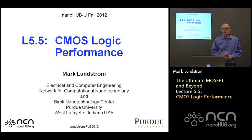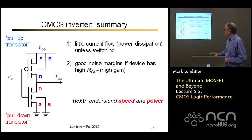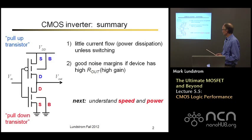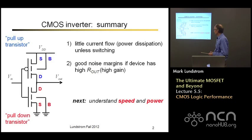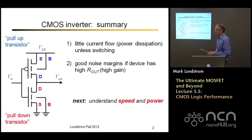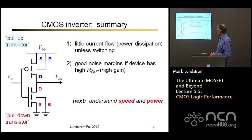Welcome back. Let's continue our discussion of CMOS circuits and CMOS logic. By way of quick review, we talked in the last lecture about the basic circuit, the CMOS inverter, which consists of a P-channel device in series with an N-channel device. The input voltage is applied to the two gates, and the output voltage is taken from the two drains. The circuit has a very nice property that very little current flows in the static condition — current mainly flows during switching. It has good noise margins, especially if we have transistors that saturate well and have a good high output resistance.